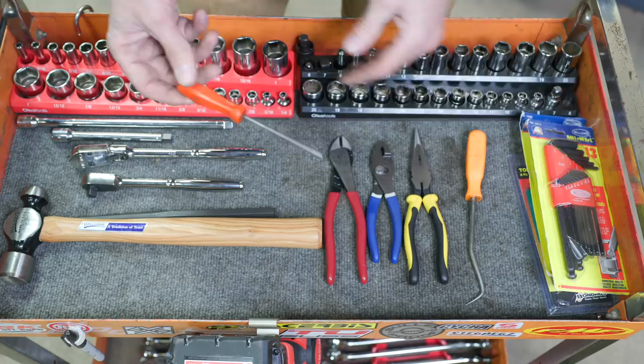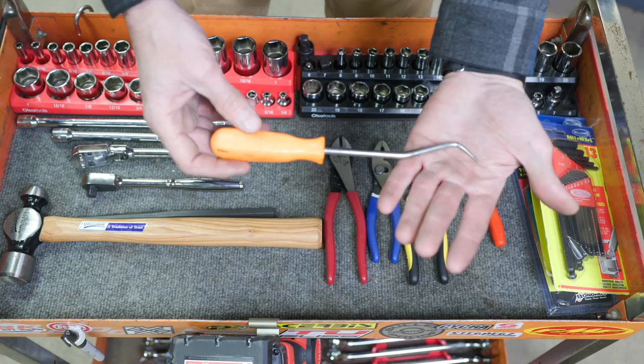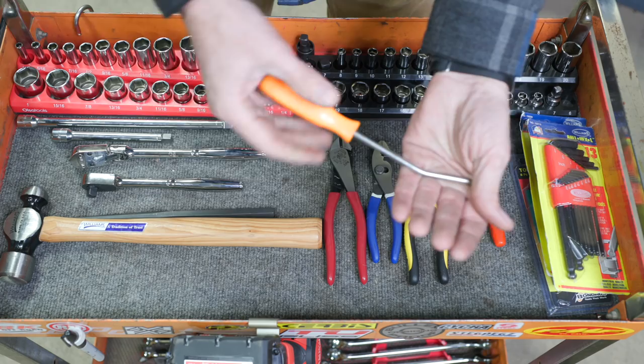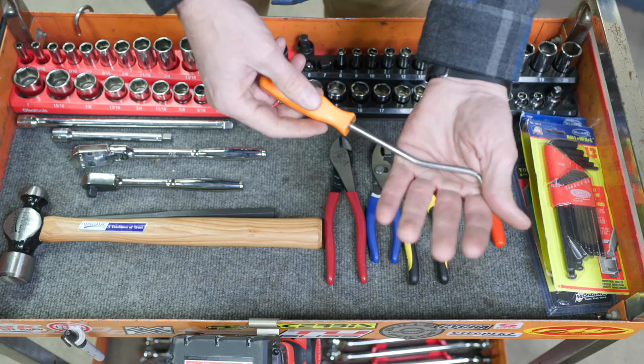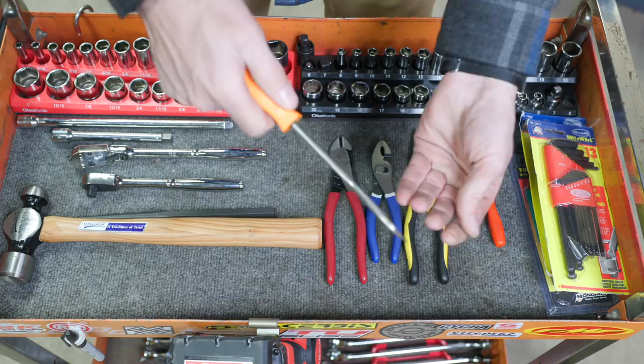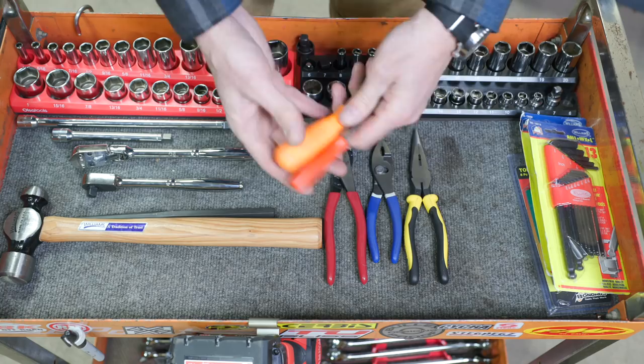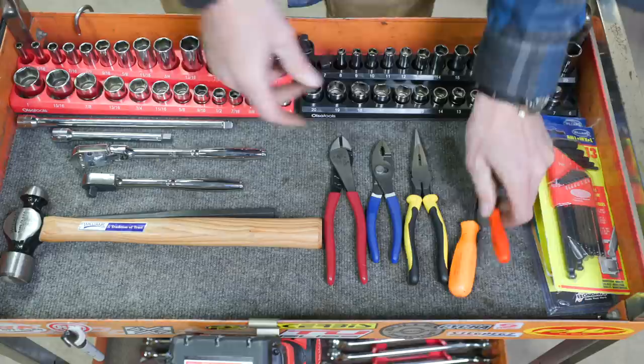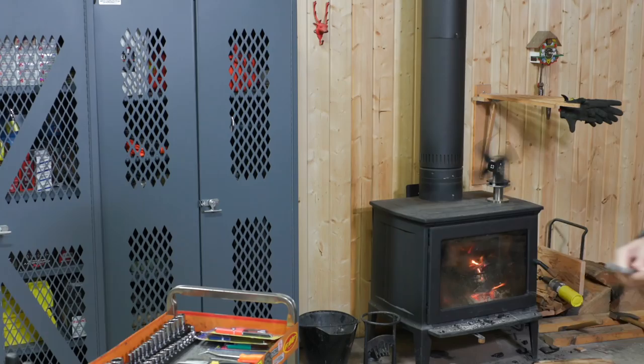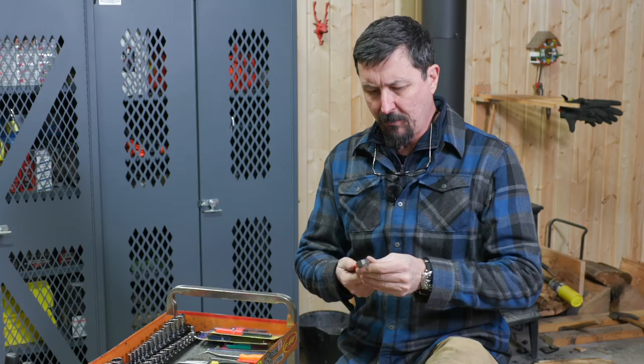This cotter pin tool is super handy. This is handy for getting radiator hoses loose when they get bonded onto the heater core. It's really great for some of those electrical plugs, like the Deutsch plugs where it's hard to get in there. You can pry and probe and pick a million different things. This needs to be in the top of your box. These two are two of my most used.